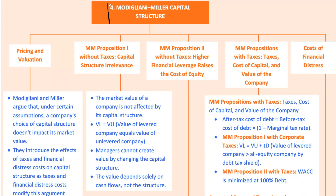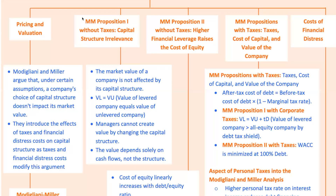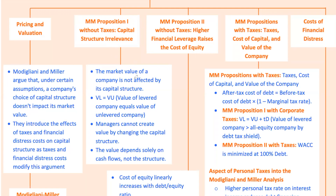Now let's get into theory with Modigliani-Miller, or MM, propositions — foundational ideas in finance, even though the real world is a bit messier. MM Proposition 1 without taxes states that capital structure doesn't affect the market value of a company. The reasoning is that investors can replicate the company's leverage by borrowing on their own account, so the mix of debt and equity doesn't change overall value. While this is a theoretical construct, it's useful to understand that in perfect markets, the way a company finances itself wouldn't matter. In the real world, taxes and bankruptcy costs make this proposition less practical.